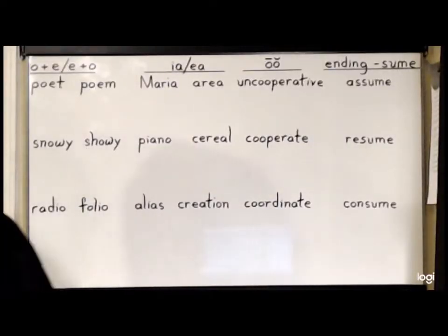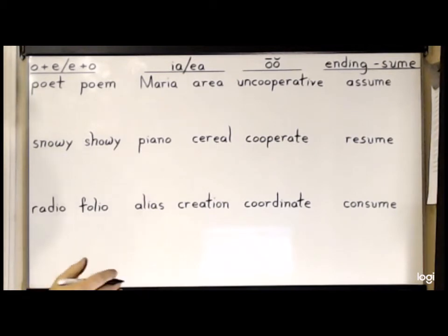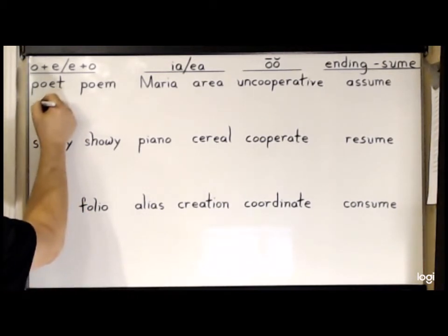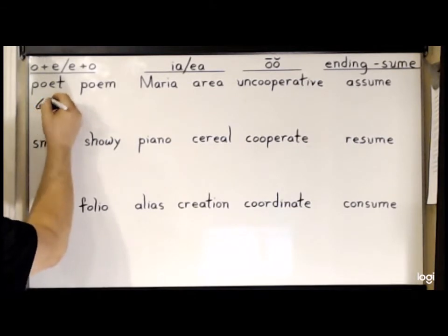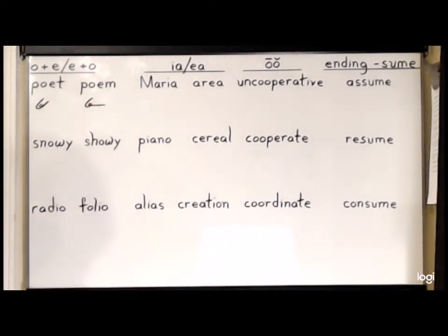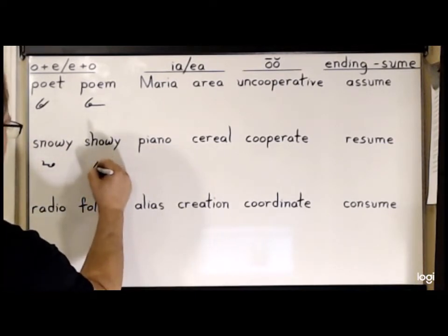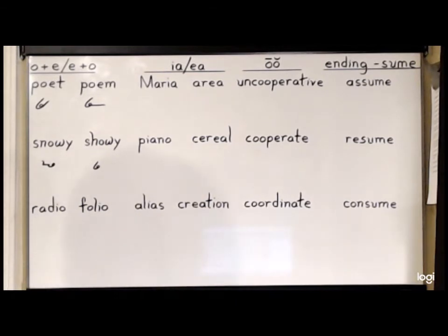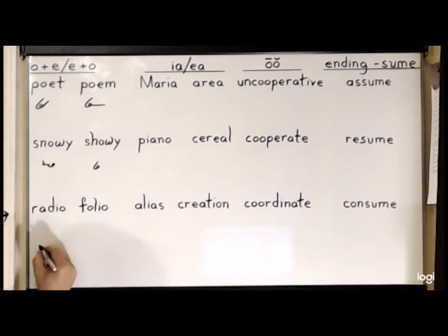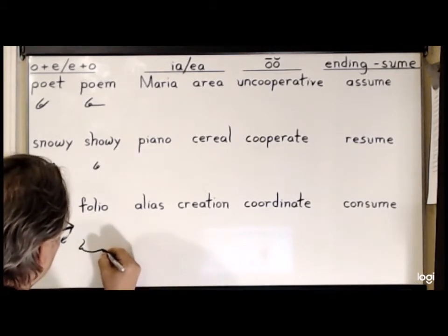Next are some other vowel combinations. We'll start with the long O to long E combination, which is basically the O and E written afterwards. So for the word 'poet', write P-O-E-T. For 'poem', write P-O-E-M. 'Snowy', S-N-O-E. And 'showy', S-H-O, small circle for the E. For the long E to long O combination, simply write E and O. Like in 'radio', R-A-D-E-O, and 'folio', F-O-L-E-O.